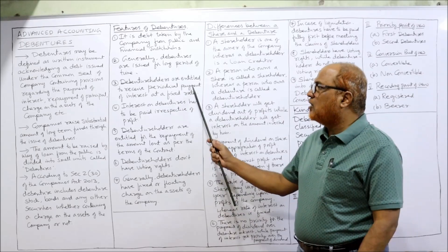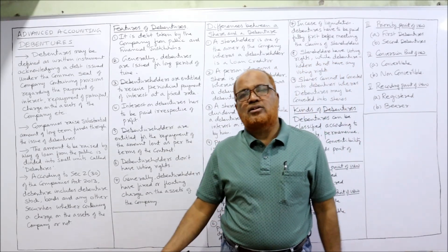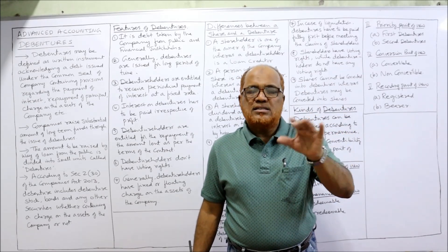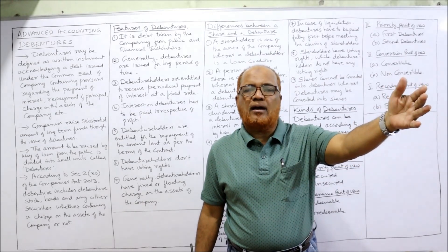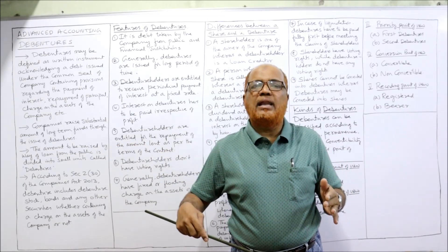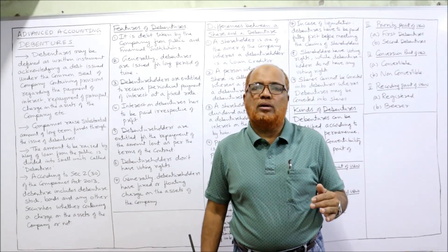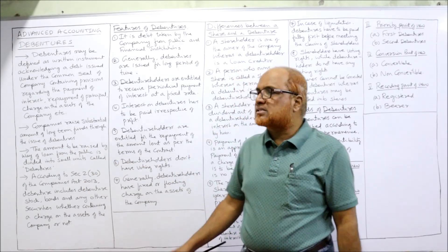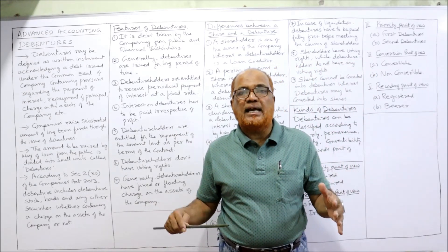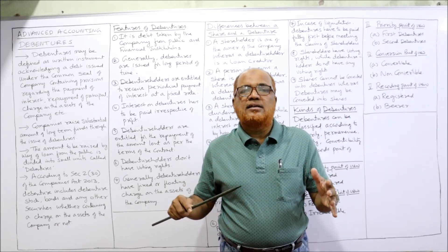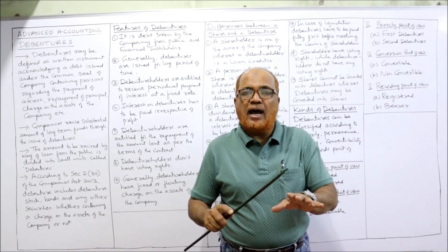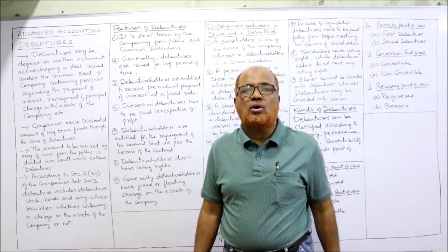Debentures are entitled to receive periodical payment of interest at a fixed rate. Just like when a company raises a loan from a bank and has to pay interest to the bank, similarly when the company takes a loan from the public, it has to pay interest on that loan at a fixed rate. Interest on debentures has to be paid irrespective of profit because it is a debt — whether the company earns profit or incurs loss, at any cost the company has to pay interest.